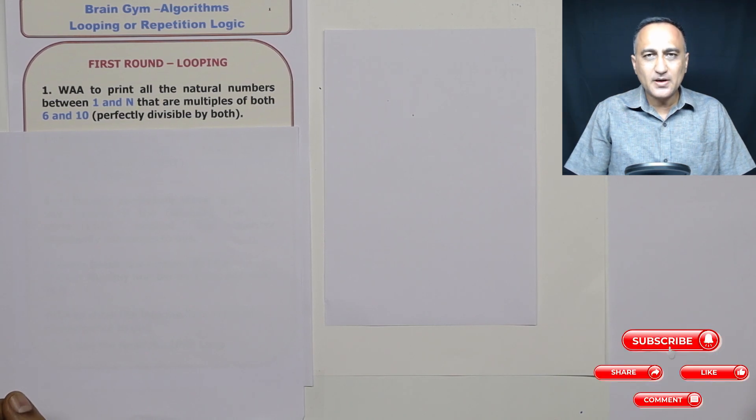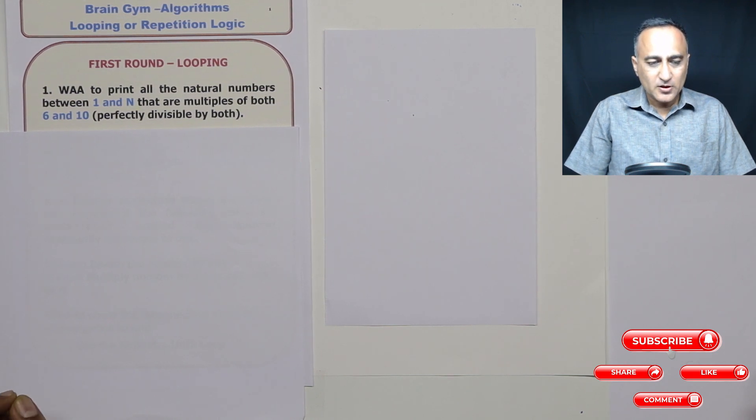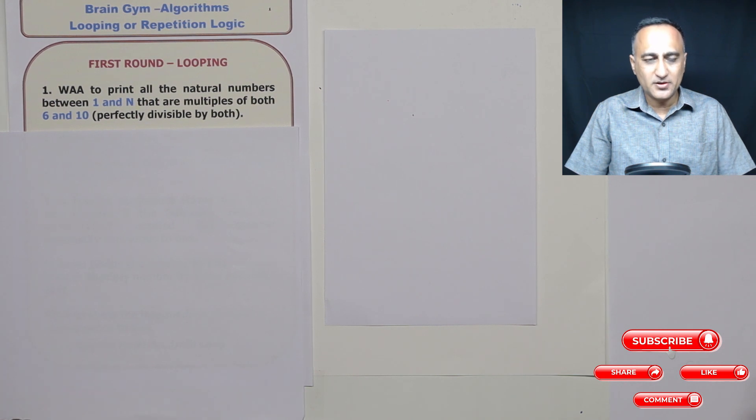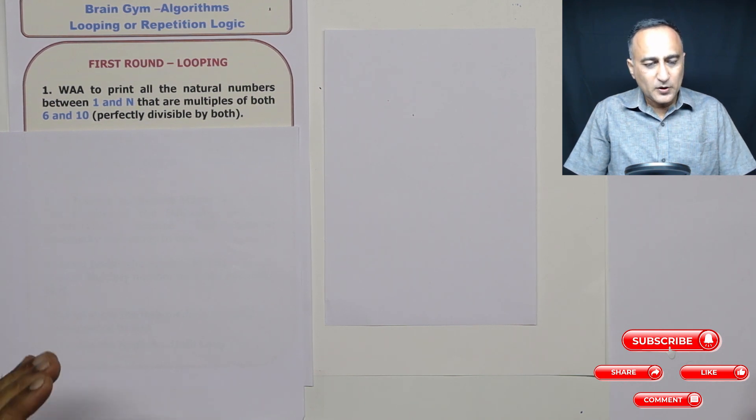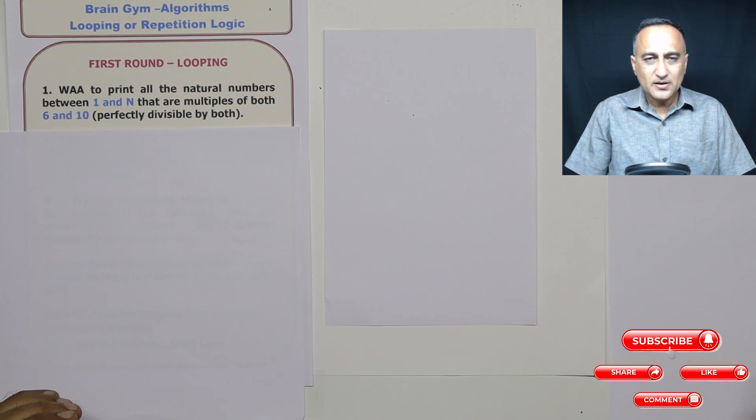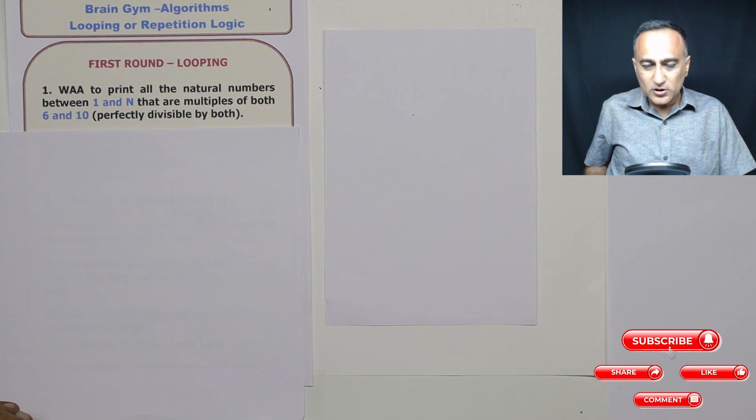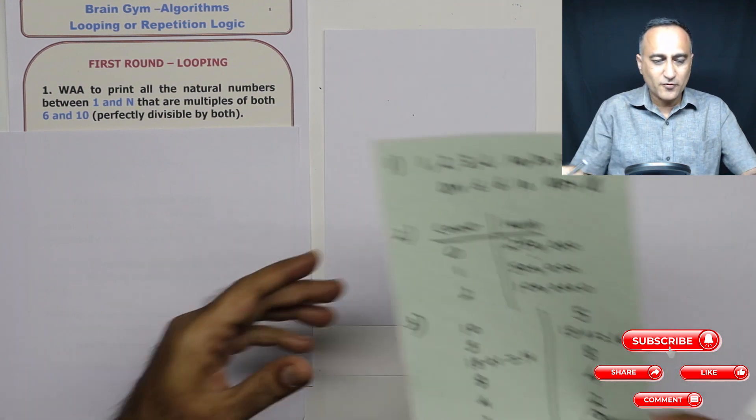Continuing the brain gym algorithm exercises for looping or repetition logic. These are brain gym repetition or looping logic assignment problems. There are total about eight or nine problems. I have divided it into three parts: part one, part two, and part three. In part one, there are three problems. To help you solve them and develop the logic, I'm going to explain what the problem is expecting from you.